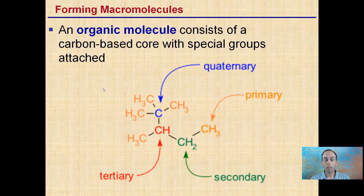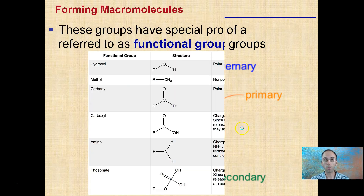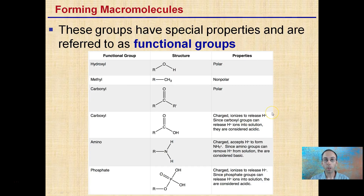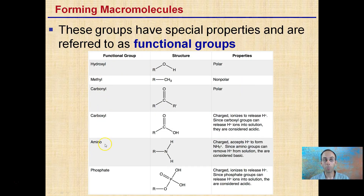So what is a macromolecule? They're carbon-based — they consist of a carbon-based core with specialized groups attached. Macromolecules are organic molecules, where 'organic' means there is a carbon-based core. These groups have specialized properties and are referred to as functional groups.